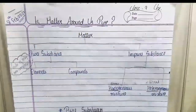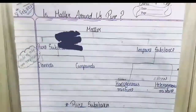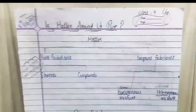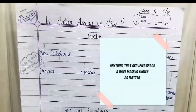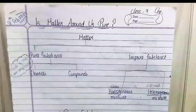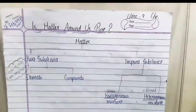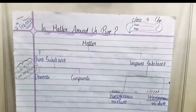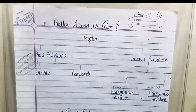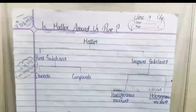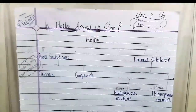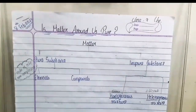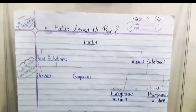First, let us recall our topic: what is matter? Matter is nothing but the substance which occupies space and has mass. If you want to understand this better, you can see my previous video — I made a video on what is matter and all about the first chapter.